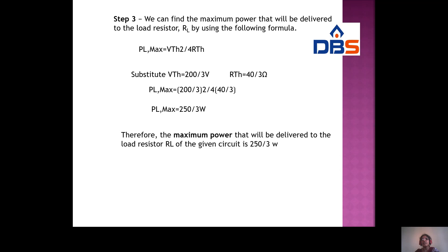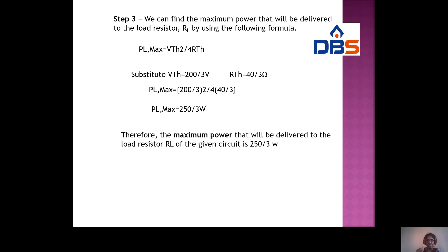Here Rth equals RL, so PL_max = Vth² / (4Rth) or equivalently Vth² / (4RL), since RL = Rth = 40/3 ohms. This confirms the maximum power transfer theorem result.